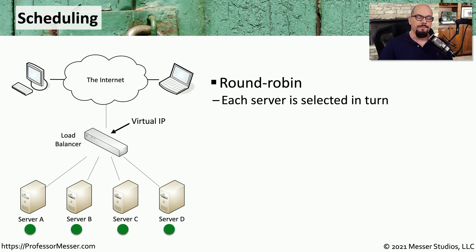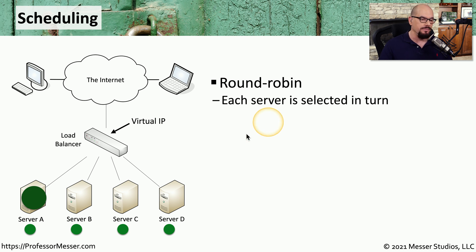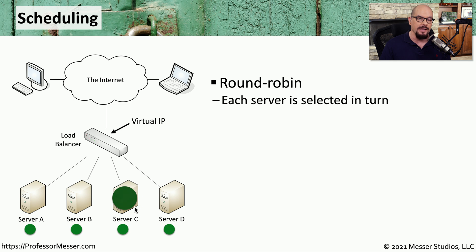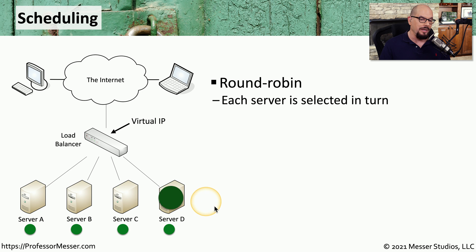There are many ways to configure the operation of a load balancer. One of those is round robin: the first user communicating through the load balancer is distributed to the first server — server A. The second user is distributed to the next server on the list, and the third person is sent to the third server, and so on. This round robin process ensures that all of the servers get exactly the same amount of load across everyone communicating into the network.